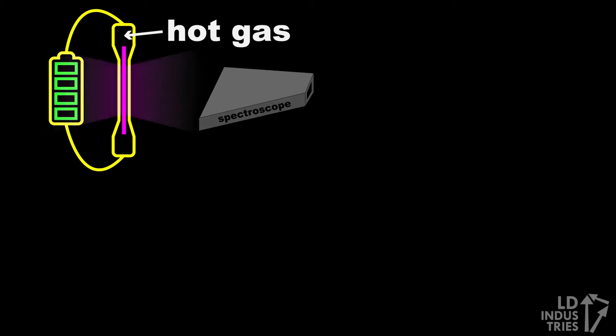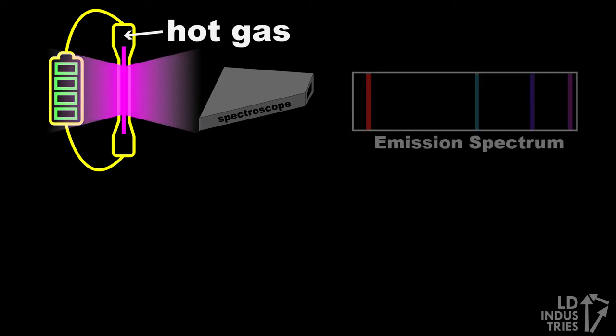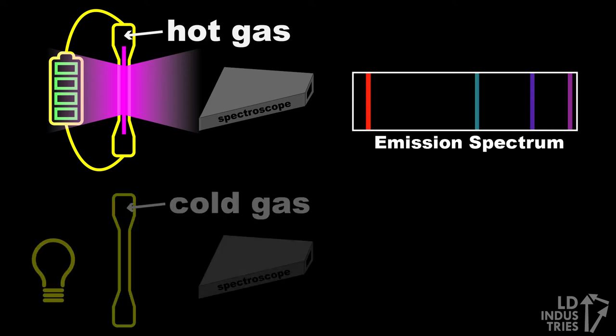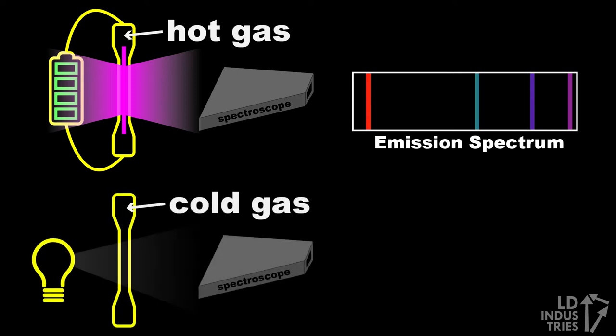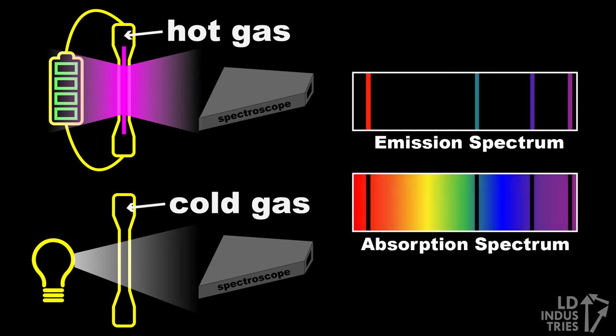And what he found was incredible. Each excited hot gas makes its own unique emission spectrum — individual bands of light of unique wavelengths and frequencies. It's like a signature for each element. Bohr repeated the experiment, this time shining bright white light through cold gases with no electricity going through them, and this time he got the exact opposite effect: a full spectrum interrupted by small black breaks where the individual bands of light should have been. This is called an absorption spectrum.